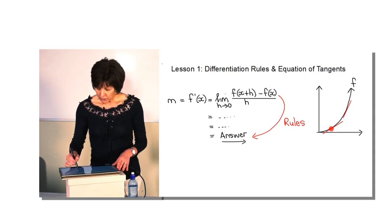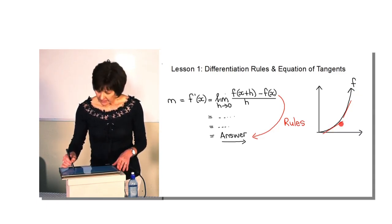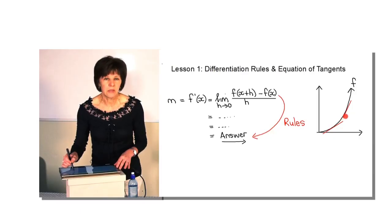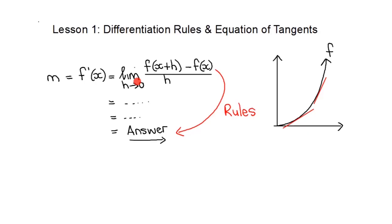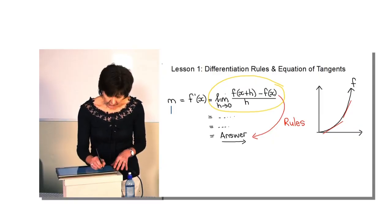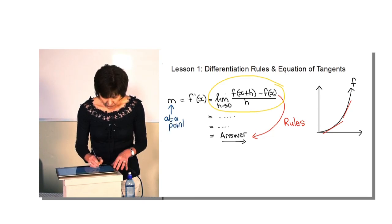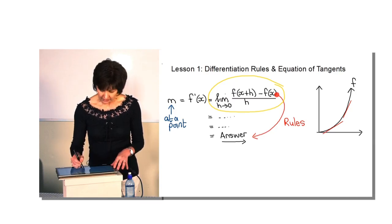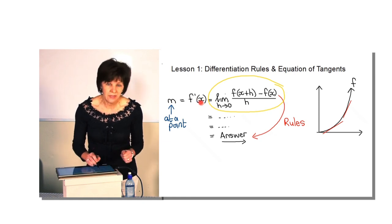We know that for a curved graph the gradient at every point is different. So mathematicians wanted to develop a method to determine the gradient at a specific point. They used what they knew about the formula for gradient between two points and also limits, and they developed the following formula. When I use this formula I will actually be determining the gradient at a certain point. And if the graph we are using is f, then we'll refer to this gradient as f prime x, or we can say it's the derivative.